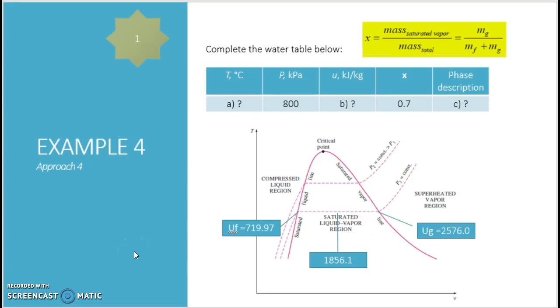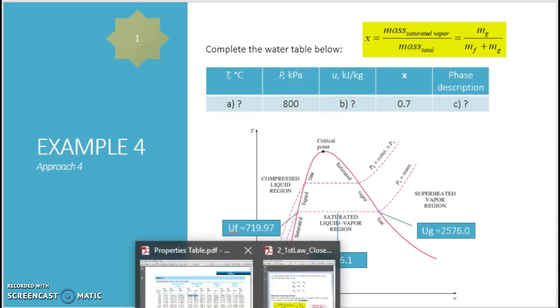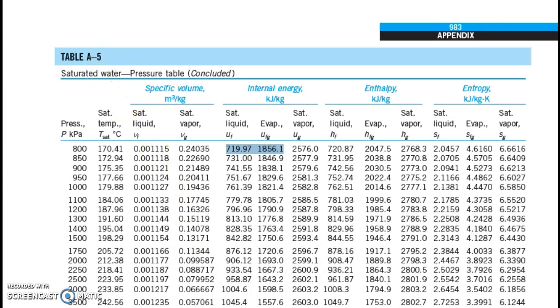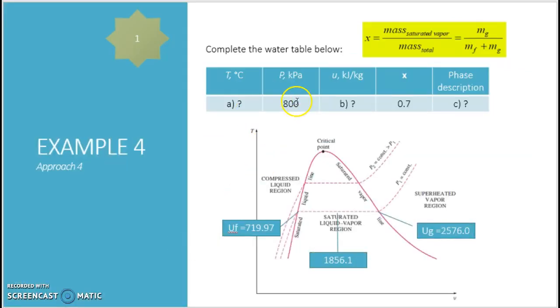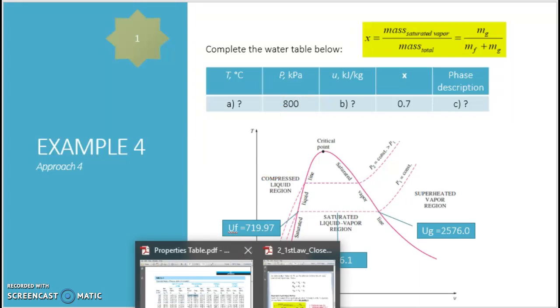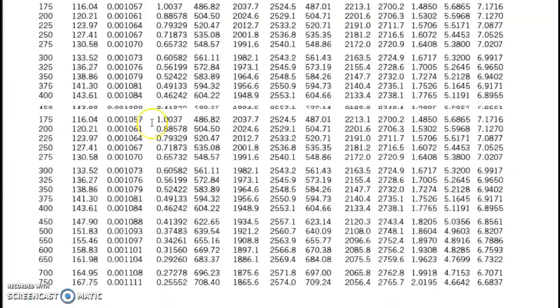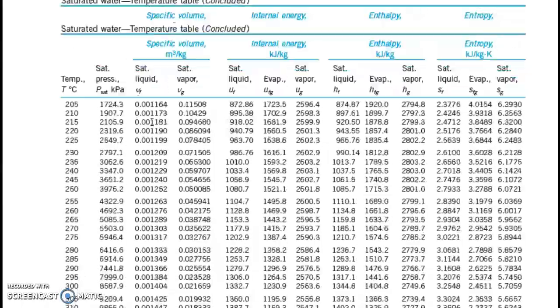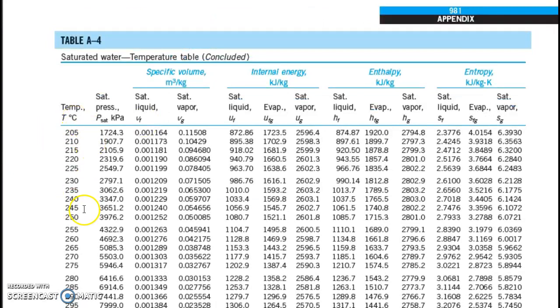So let us recap back. When you have this type of question, when given to you pressure and the value of X. What you need to do first is: If the question given you pressure, so you are going to read from your table E5. If the question gives you temperature instead of pressure, so you are going to read it from table E4.